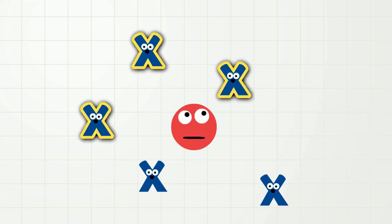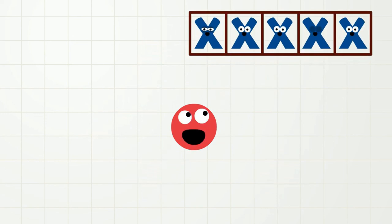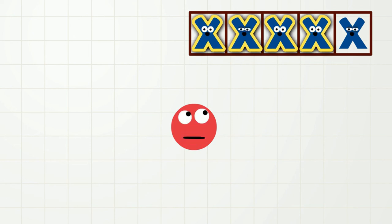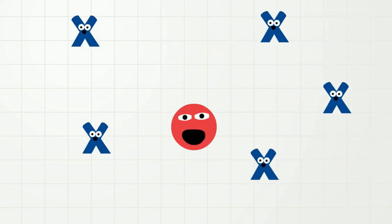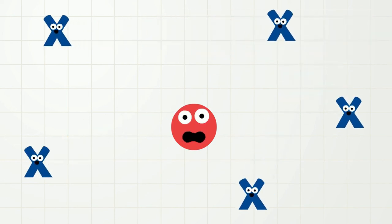So even if the X's go all the way over there, there are still five. One, two, three, four, five. And even if they are spread out, there are still five. One, two, three, four, five.